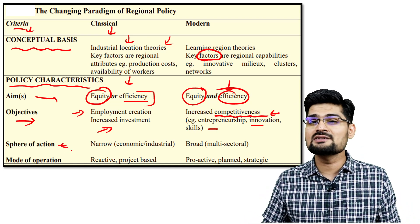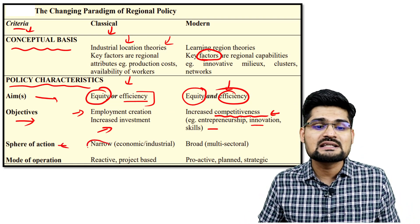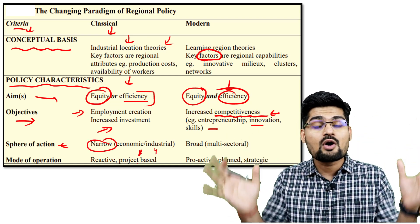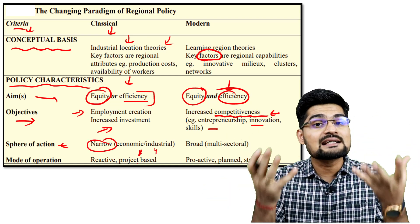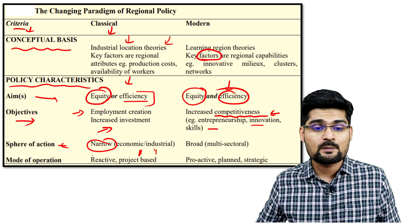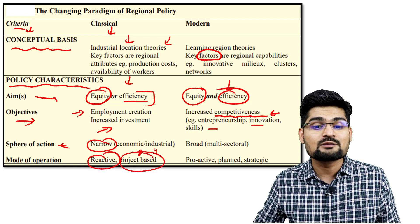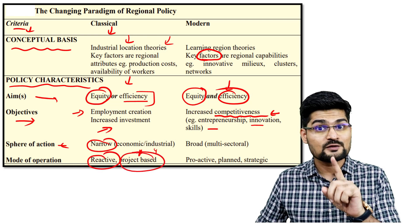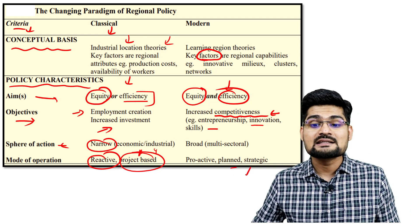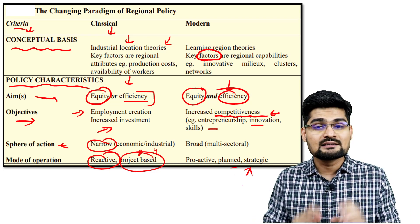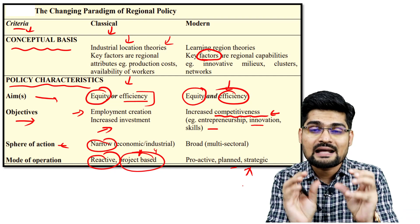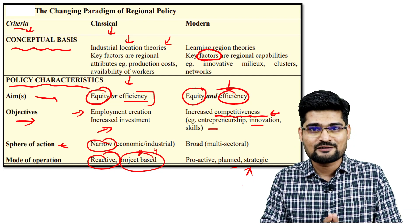In terms of sphere of action, earlier it was narrow — economic and industrial — but now it has become broad, with multi-sectoral development strategies. Modes of operation earlier were reactive and project-based, but now they are proactive, futuristic, planned, and strategic. This represents the change in paradigm in terms of planning for regional development.